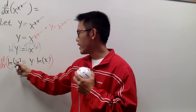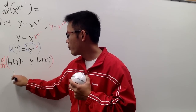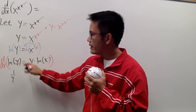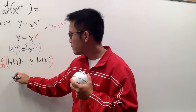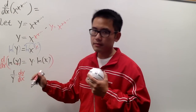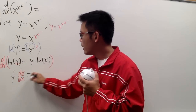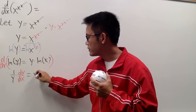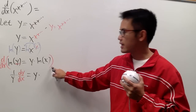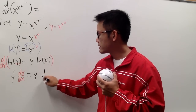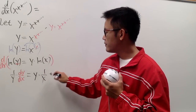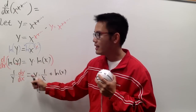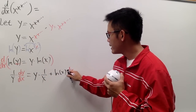On the left-hand side, the derivative of ln y is 1 over y, but we have to multiply by the derivative of y by the chain rule. Since y is a function of x, we multiply by dy/dx. On the right-hand side, this is the product of two functions, so we use the product rule. The first function is y times the derivative of the second — the derivative of ln x is 1 over x — plus the second function, ln x, multiplied by the derivative of the first, which is dy/dx.